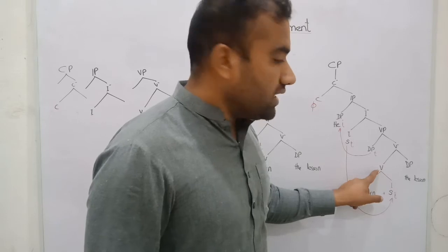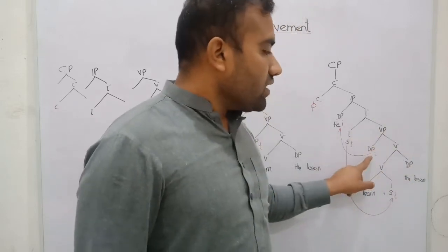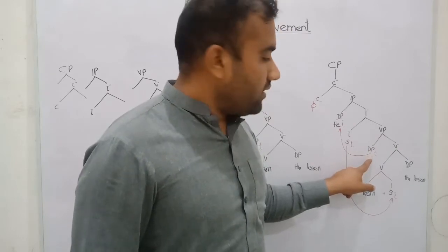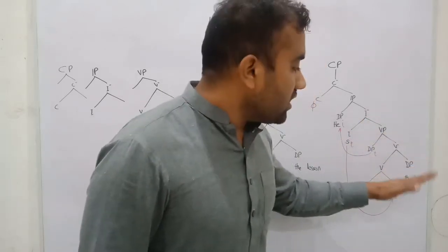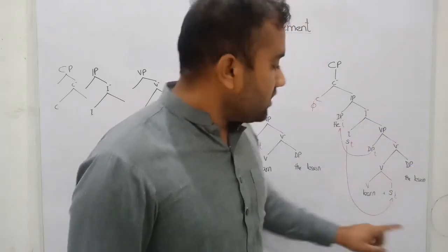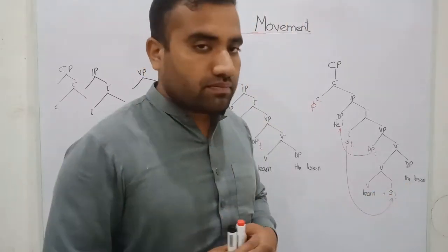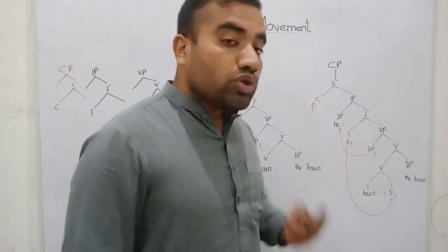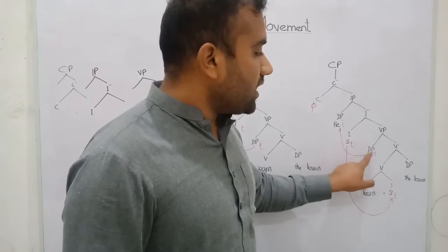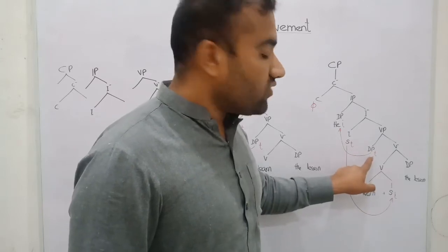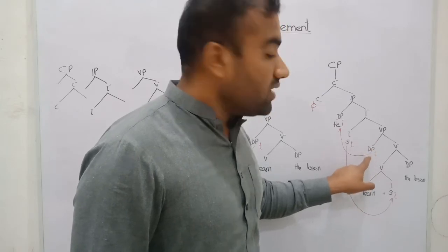This position is the head position. The head takes DP as a complement and constructs the VP. This is the argument position of the specifier, and in this position we have 'he.' We have constructed our argument structure: 'he learns the lesson.' The problem is two problems: first, this is an unmarked verb; second, this is a caseless DP — this DP has not been assigned case.